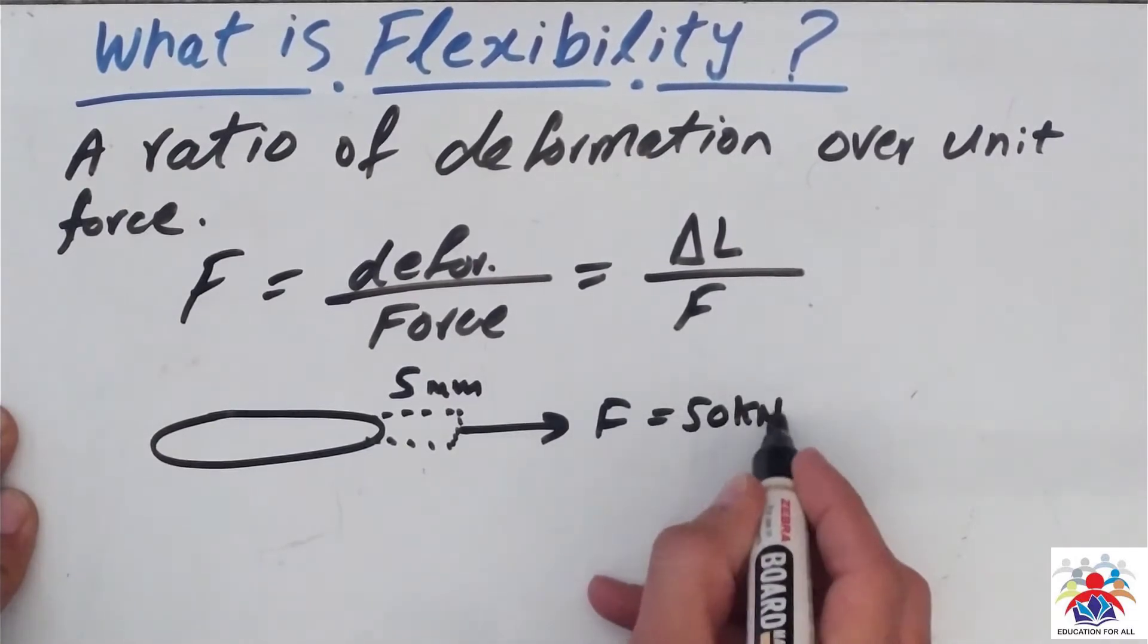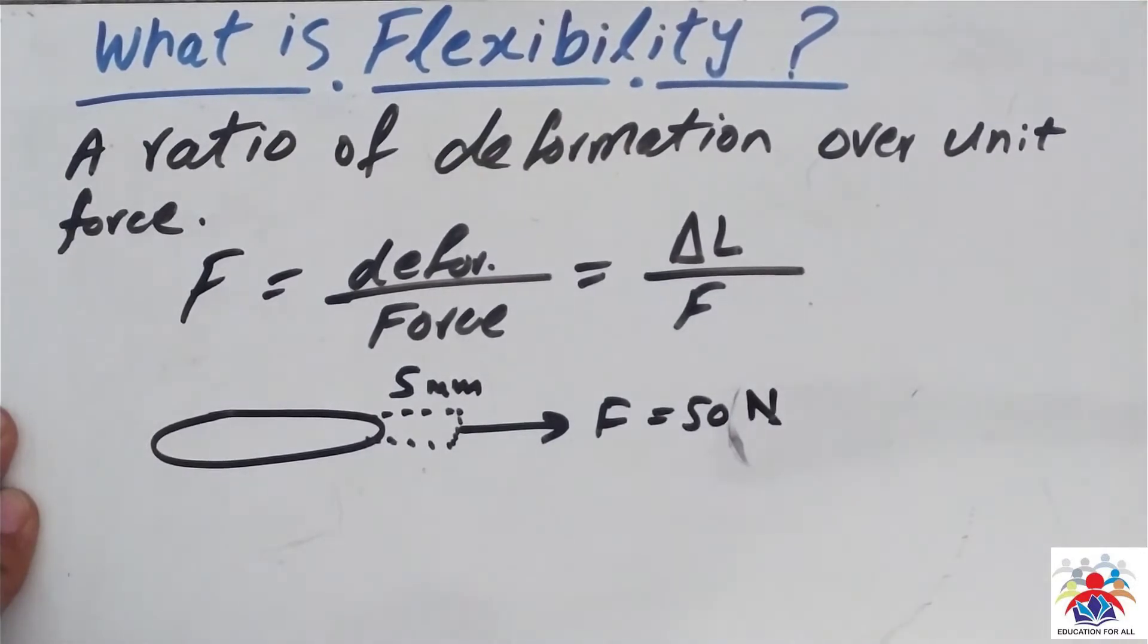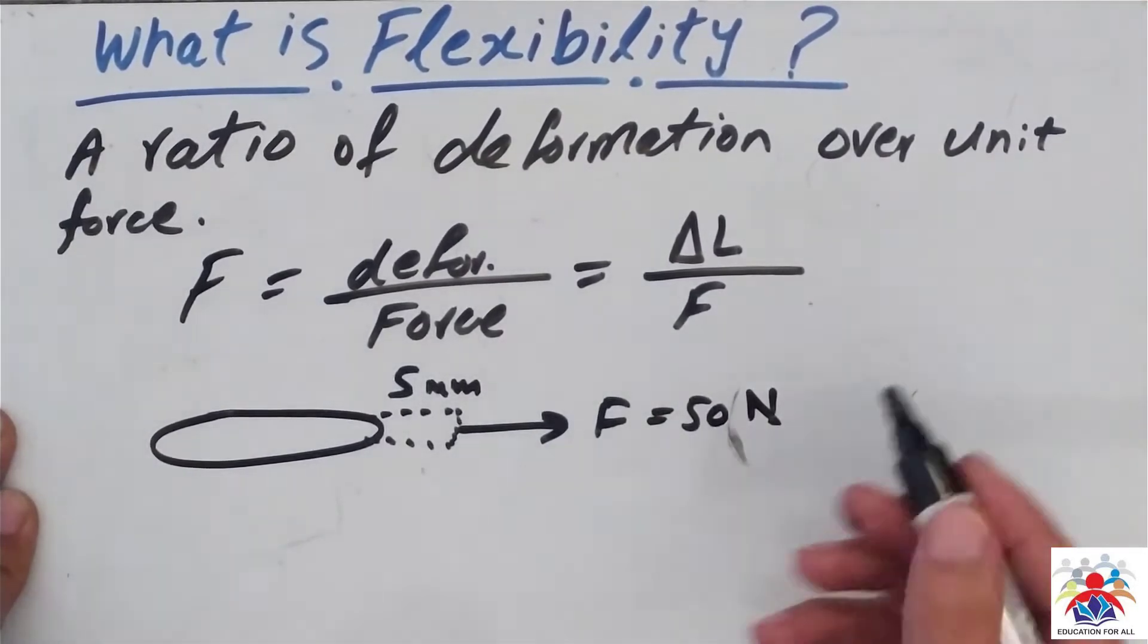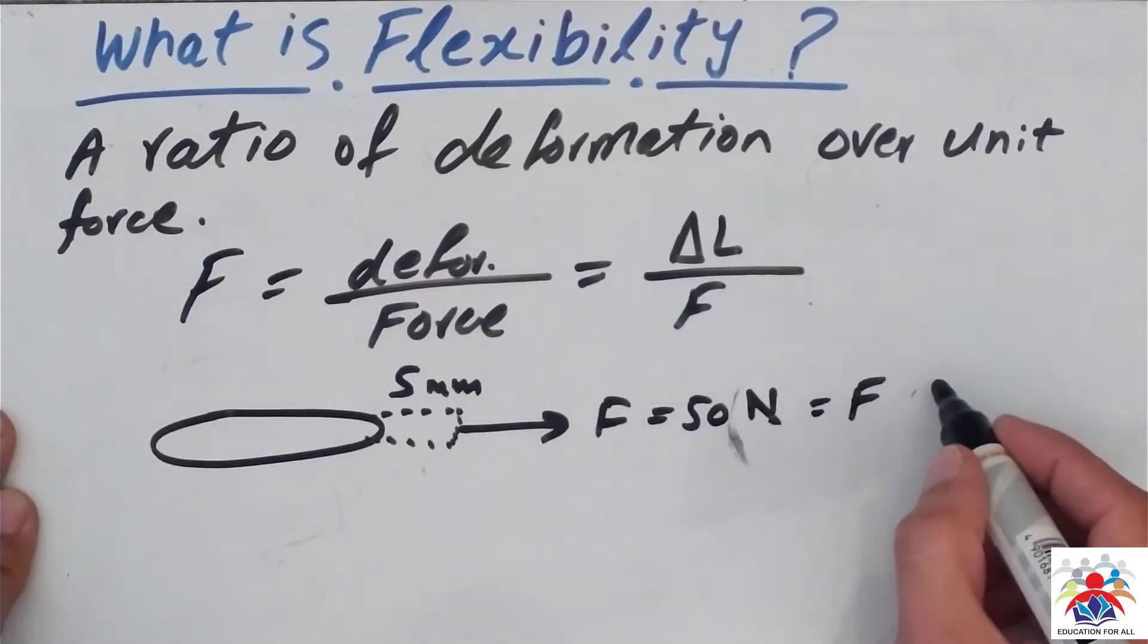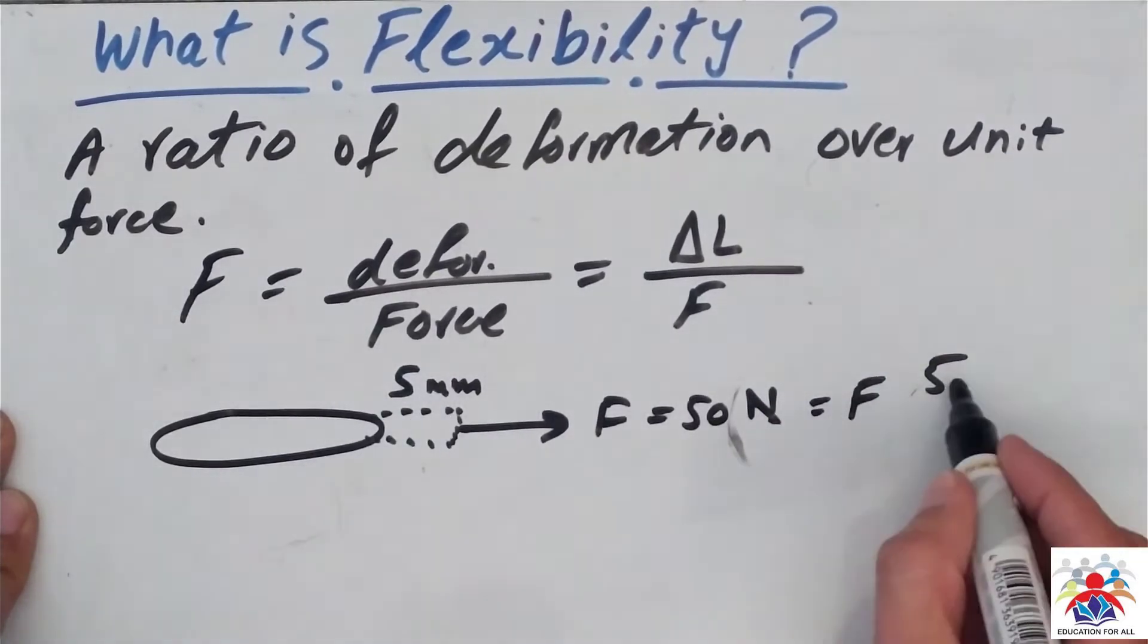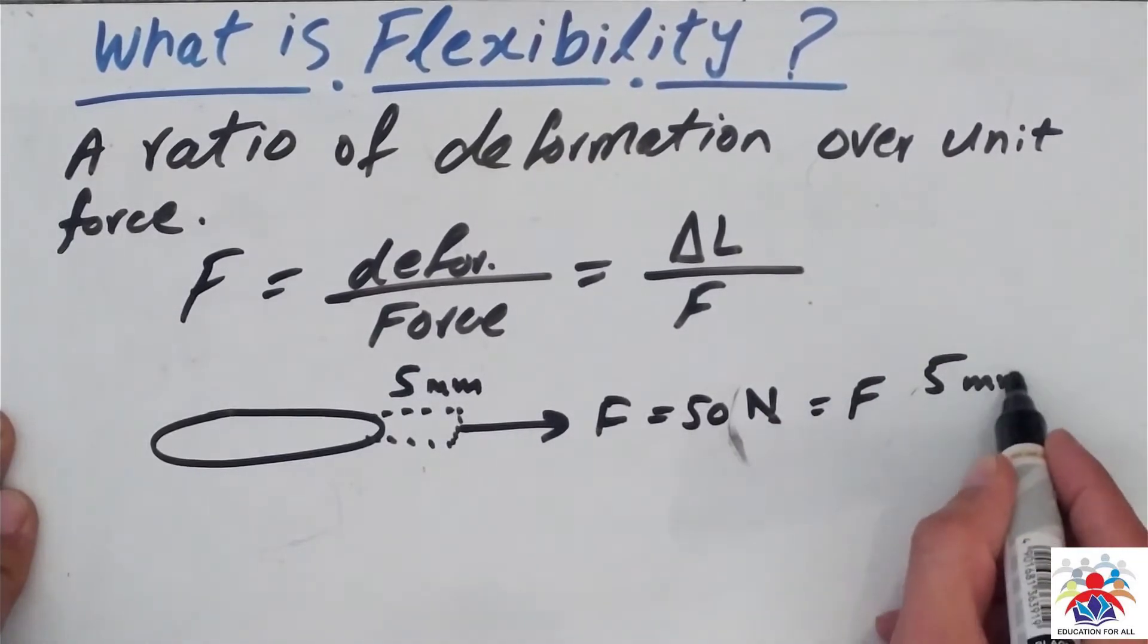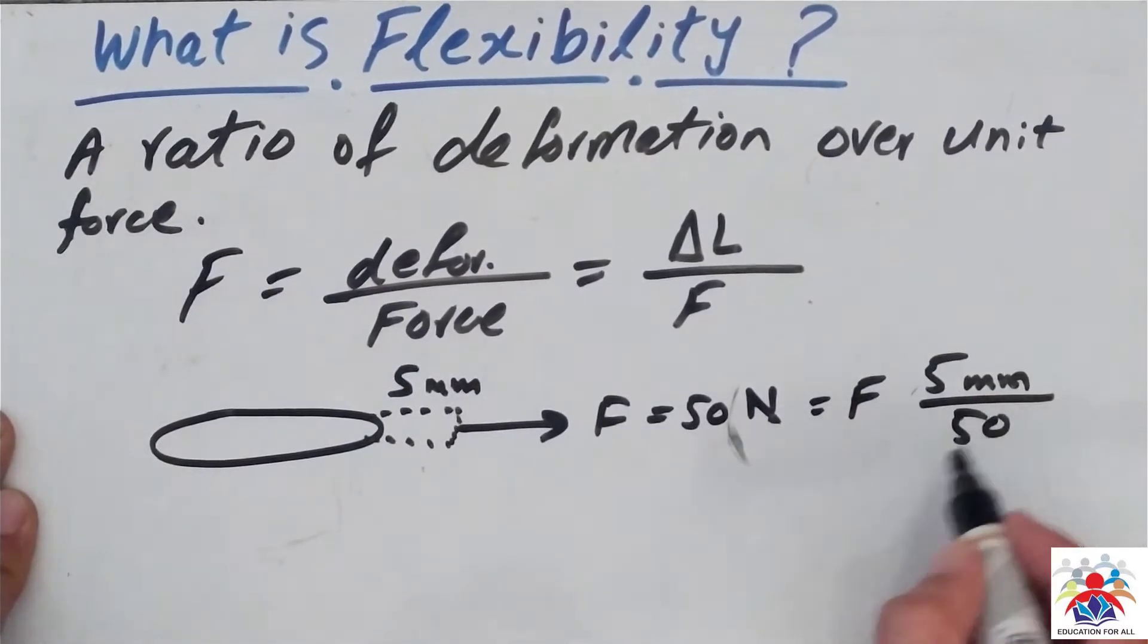So what it would do, according to this flexibility formula: change in length, which is five millimeters, divided by force, which is 50 kilonewtons. So the flexibility would be 0.1 millimeters per Newton.